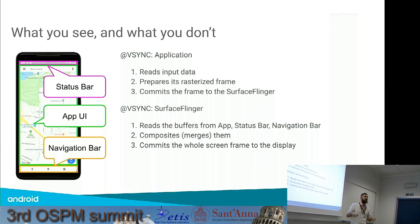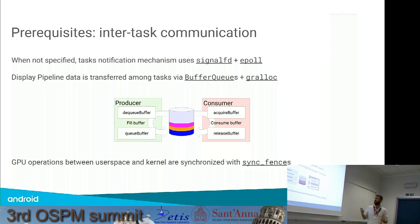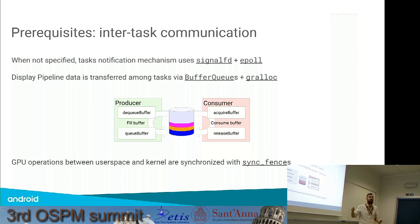Before going straight to the details of the whole display pipeline, let's discuss how the tasks involved in this process communicate and synchronize with each other. The processes involved are basically waiting for signals, and these signals are most of the time sent through file descriptors at the signal API.